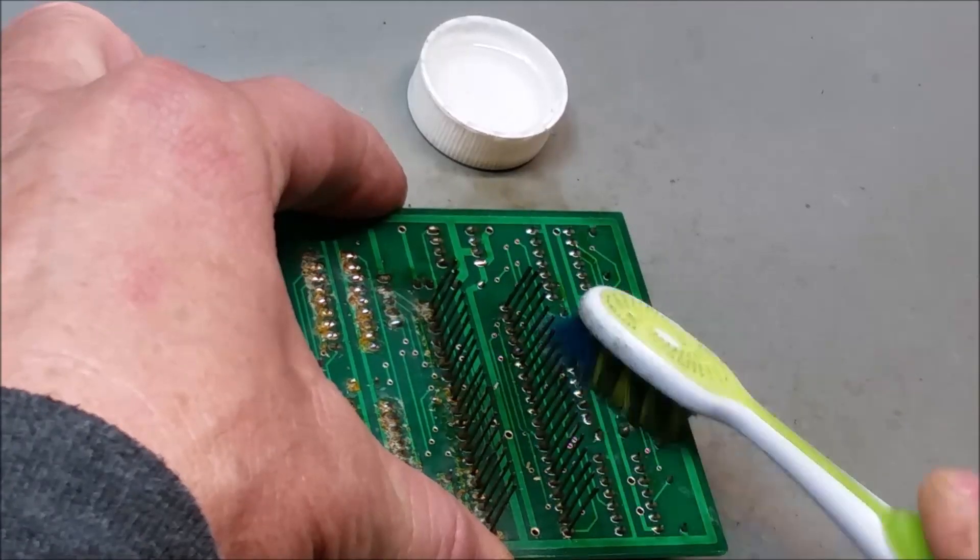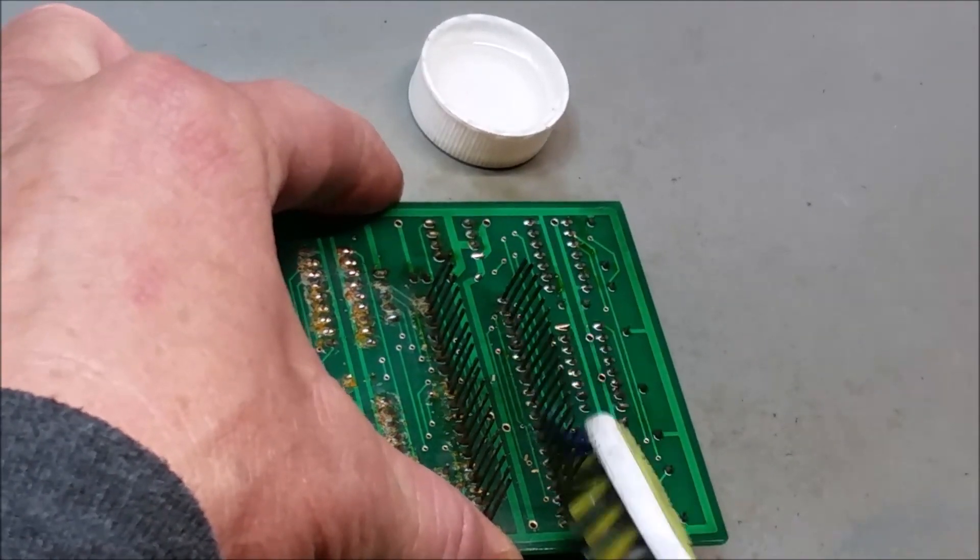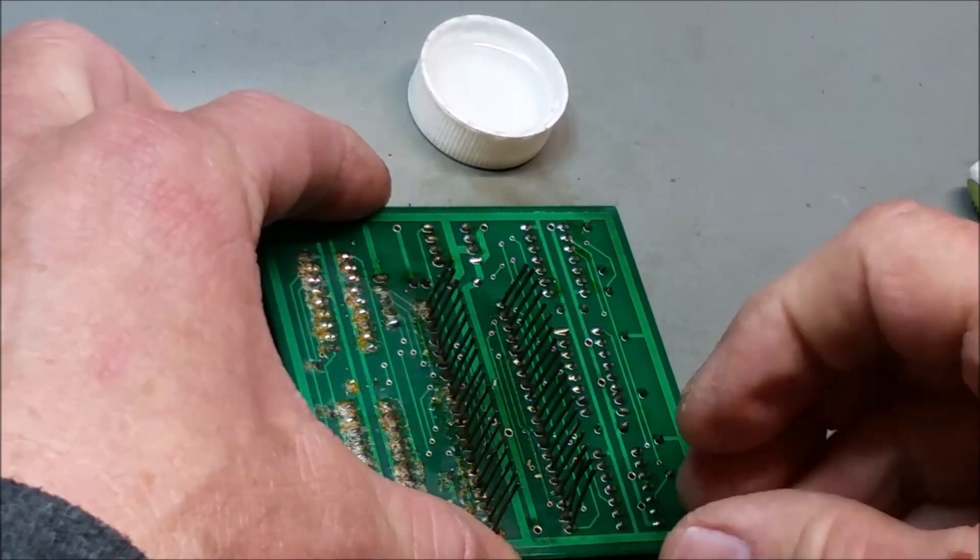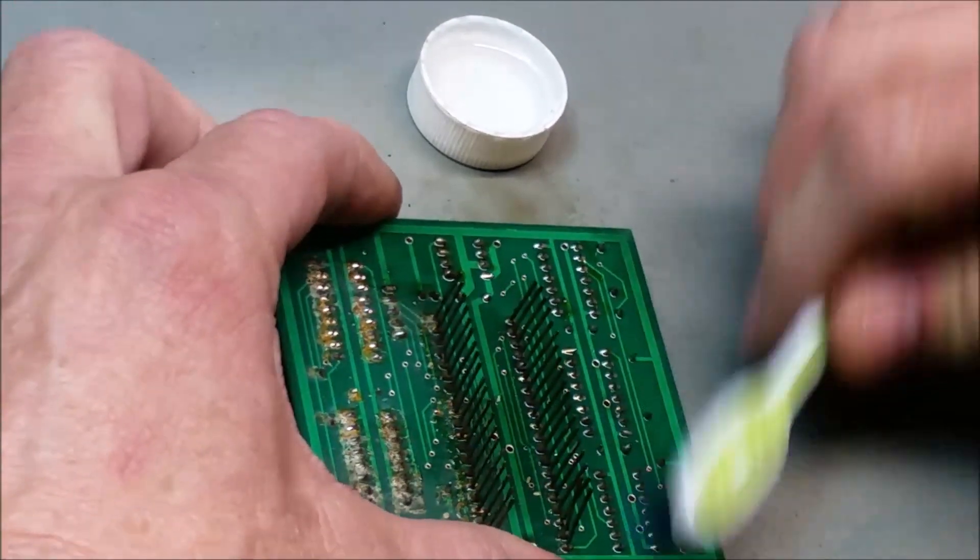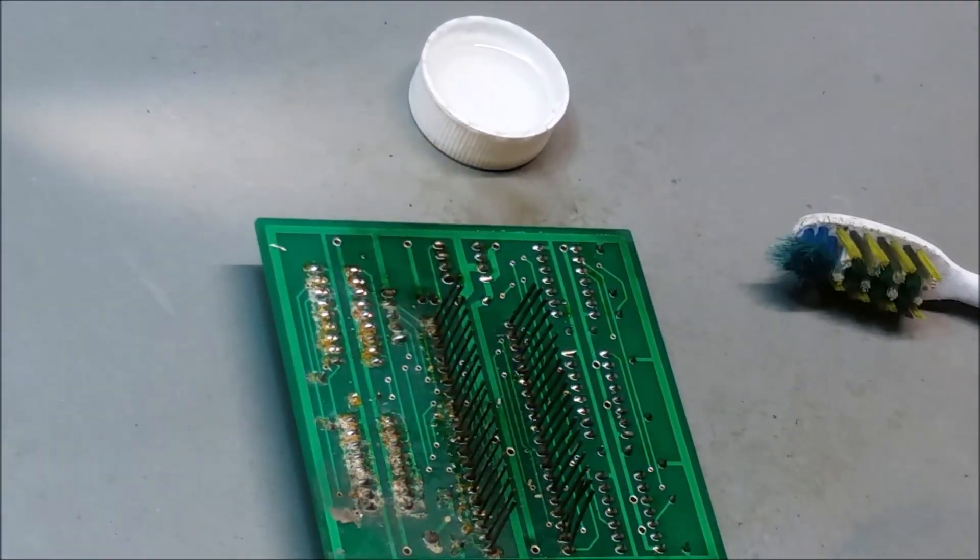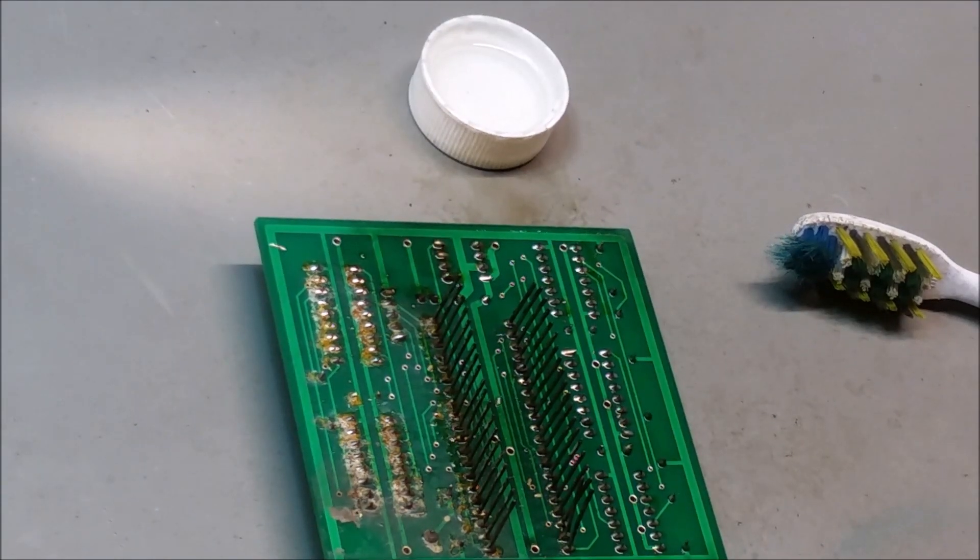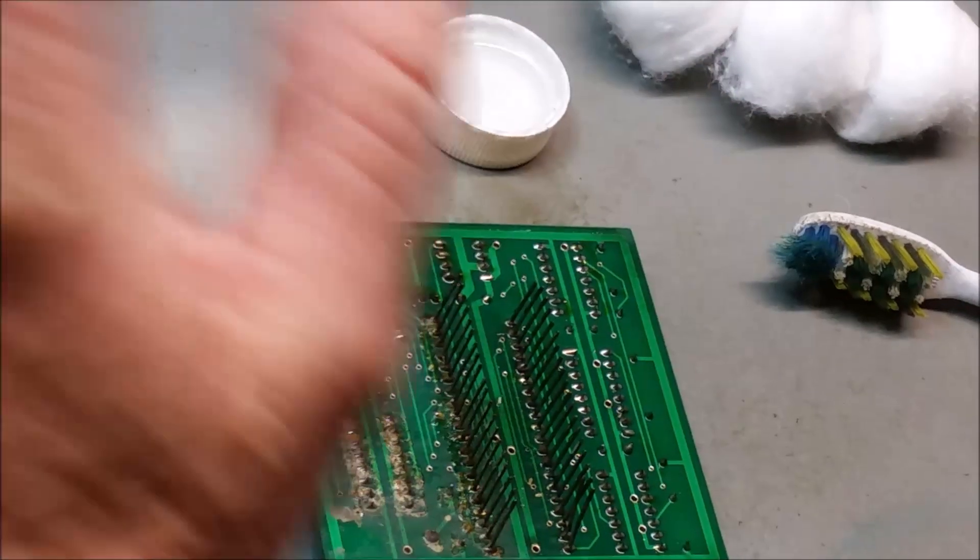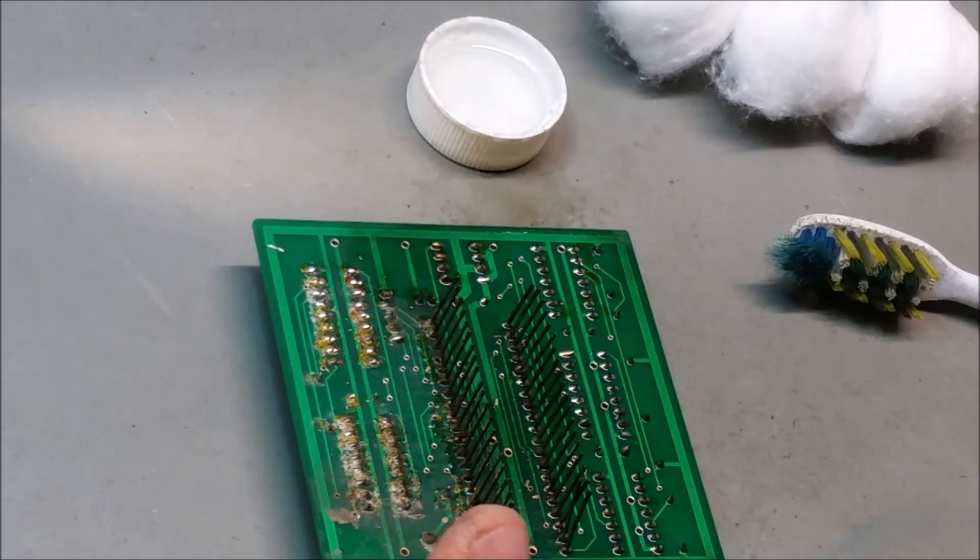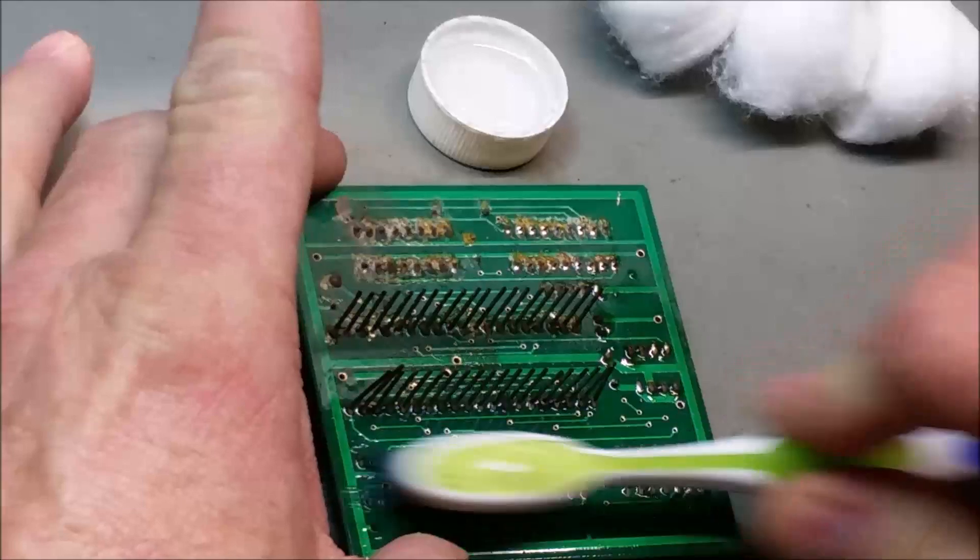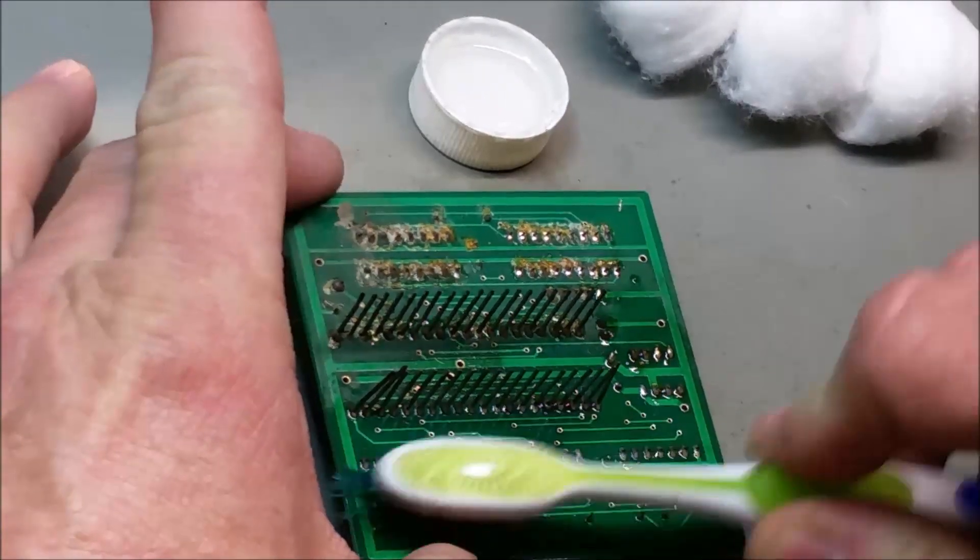I'll just do this one half. I bent a couple of legs, I'll bend them back. So I use that and then I have some wonderful cotton balls. And I haven't even pulled the PCB cleaner out yet. I may not need it at all. Isopropyl alcohol might just be enough to clean all this up.